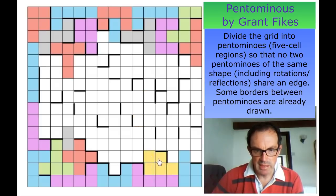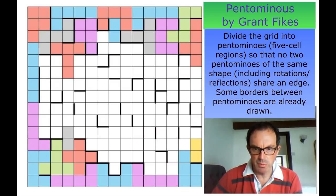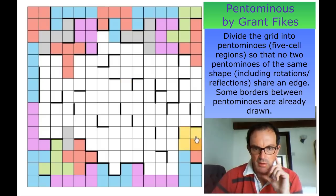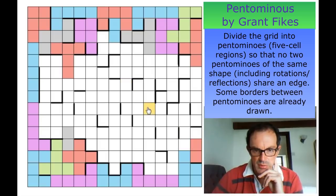So this little square mustn't be a P pentomino — we must allow something else. We can't have this square being part of that, so now those two squares are part of the same region. We've got to be really careful here — we can't have this as a P pentomino. So it could be a U.